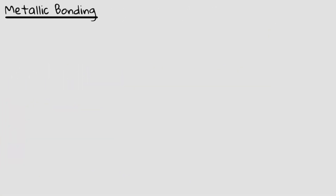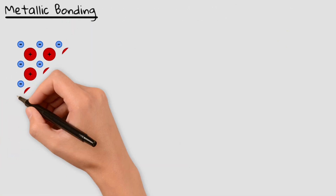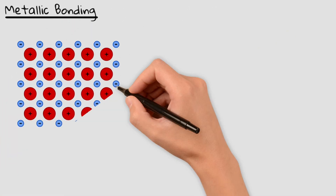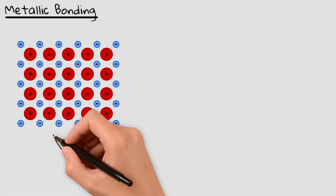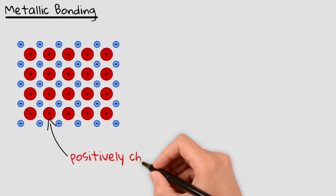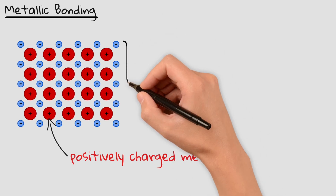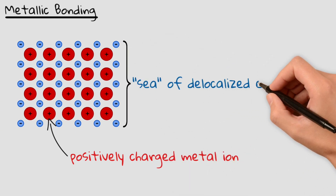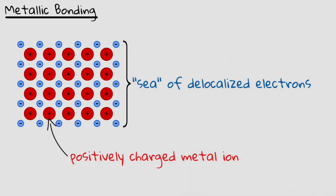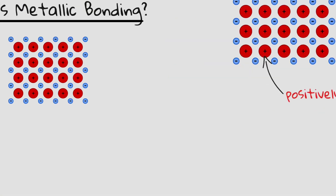Unlike ionic or covalent bonding, metallic bonding is the attraction between positively charged metal ions and a sea of delocalized electrons surrounding it. This unique structure gives metals their key properties.